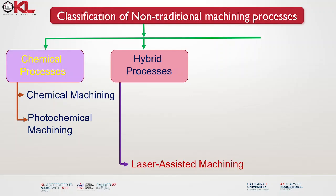Laser assisted machining is a hybrid machining process that combines traditional machining methods with laser technology to enhance the cutting or material removal process. A laser beam is used alongside a cutting tool to improve machining performance, efficiency and precision. It is utilized in various industries including aerospace, automotive, medical devices and precision engineering, offering improved machining performance, extended tool life and enhanced surface finish.